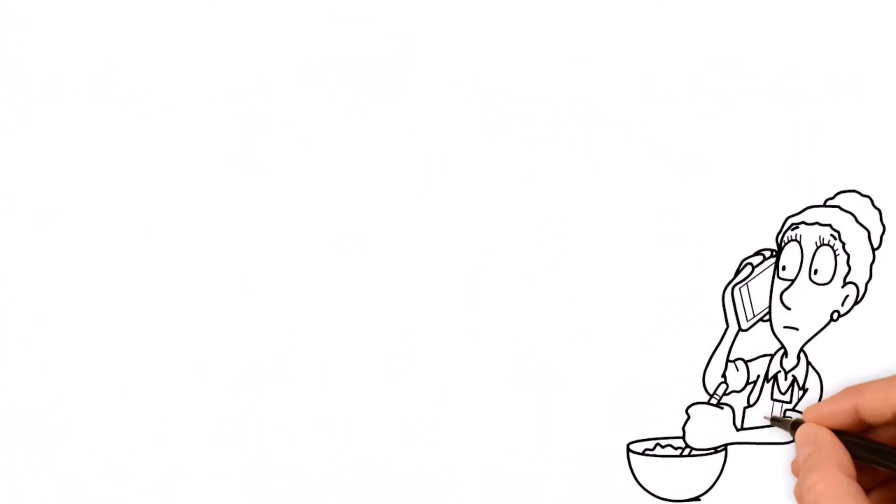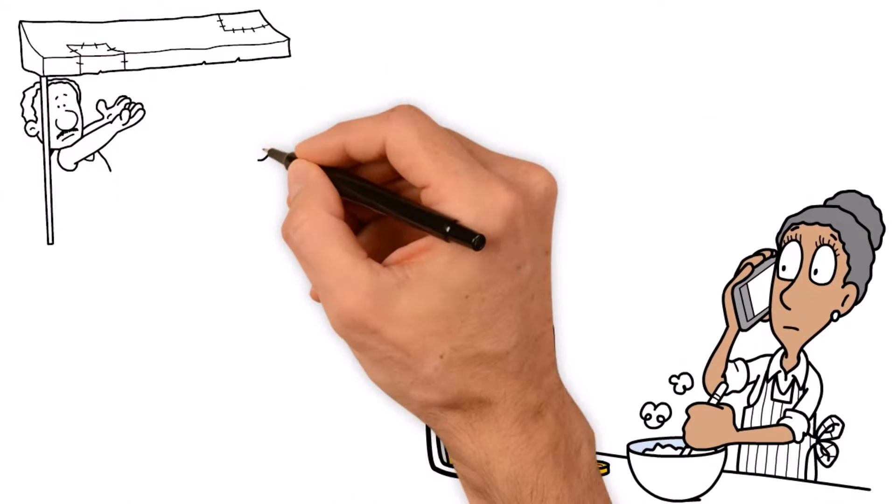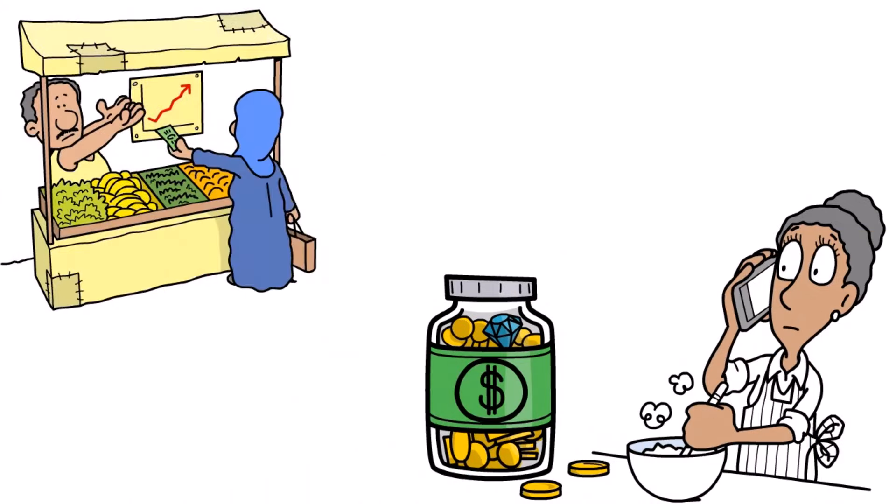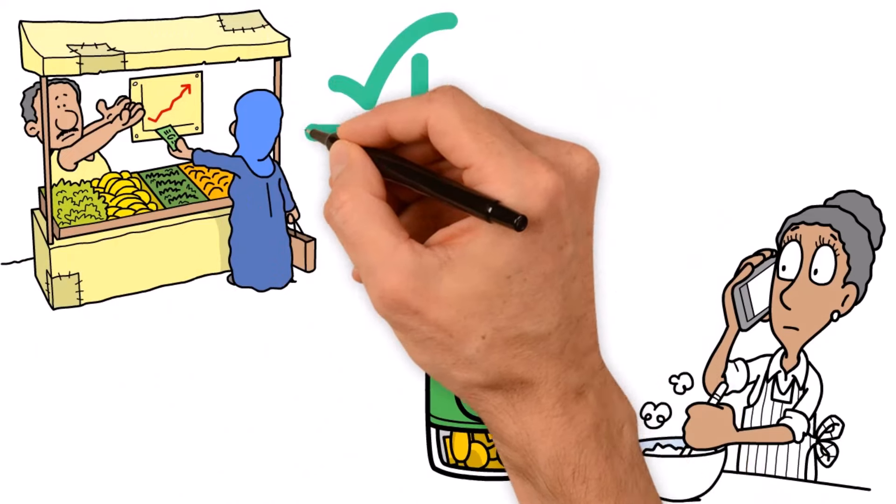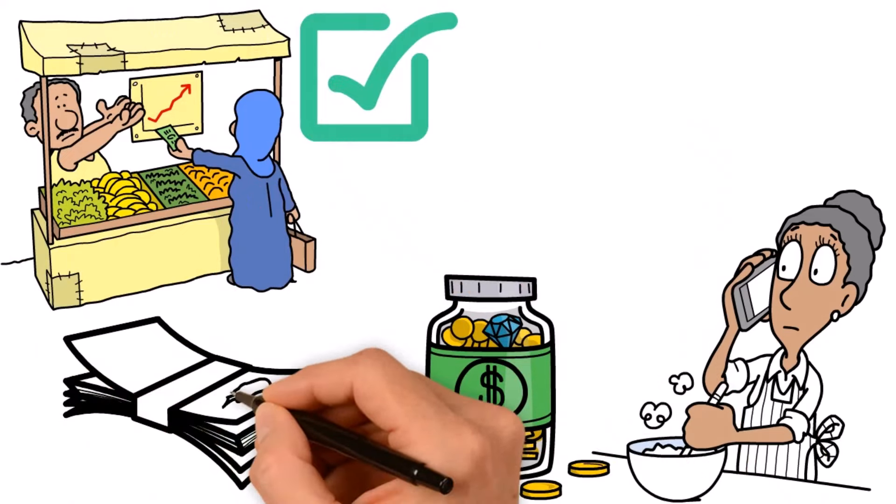Cooking at home is a game changer when it comes to saving money. Buying groceries and cooking your meals is generally more cost-effective than eating out. You have more control over the ingredients and portion sizes, allowing you to stretch your dollars. Interestingly, you can prepare nutritious and delicious meals at a fraction of the cost of eating out with careful planning and budgeting.